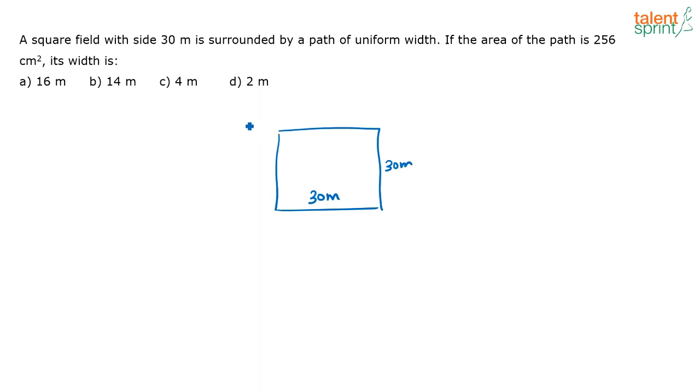And then it is surrounded by a path of uniform width. So this is also going to be a square. I don't know this width, I am going to take it as x. So this is also x, this is also x and this is also x.